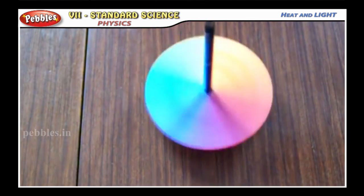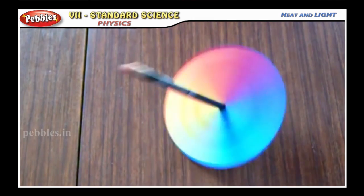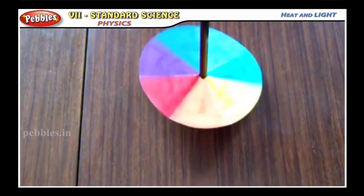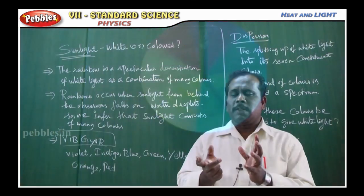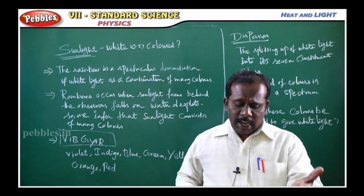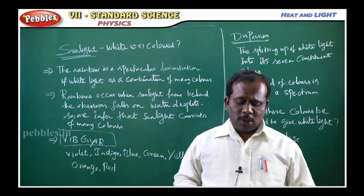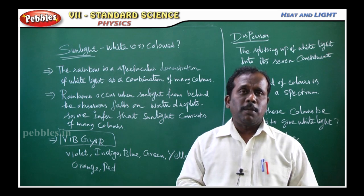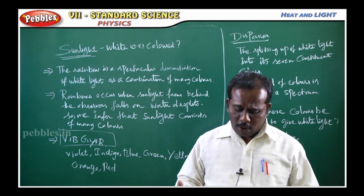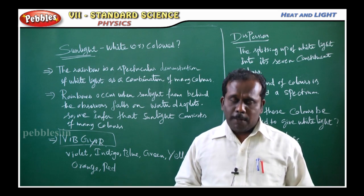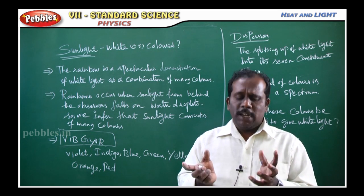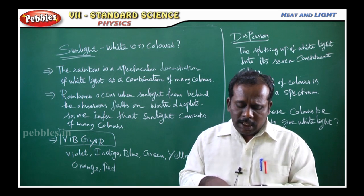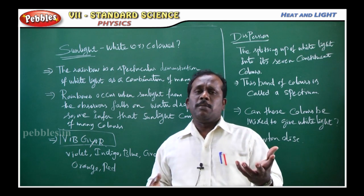Spin the disc as fast as you can. When the disc spins very fast, the colors merge together. In the Newton disc experiment, we prove that the 7 colors disappear and the disc appears to show white color.